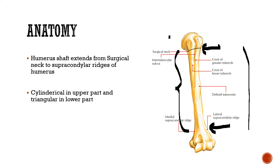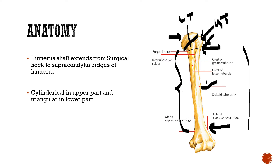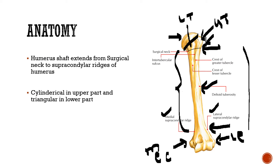Looking at the anatomy: this is the head, the anatomical neck, the surgical neck, the greater tuberosity (GT), the lesser tuberosity (LT), and the insertion of the deltoid — the deltoid tuberosity. This is the lateral supracondylar ridge, the medial supracondylar ridge, the medial epicondyle, the lateral epicondyle, the capitulum, and the trochlea.